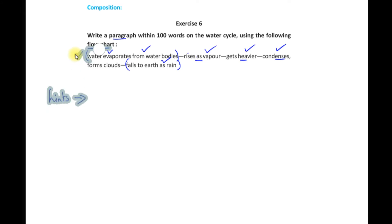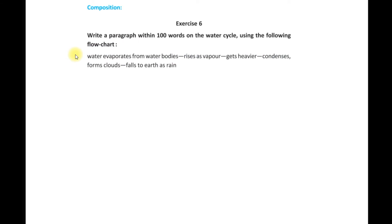Now let us start. Write the paragraph. Before writing the paragraph, you should read the instruction carefully. Write a paragraph within 100 words on the water cycle. So the main topic of this particular paragraph is water cycle, using the following flowchart. This flowchart has 5 points. Let us read the points.